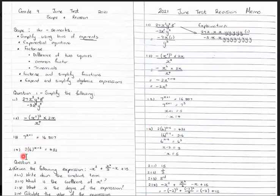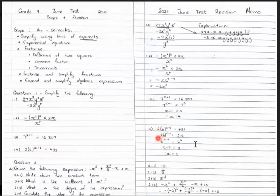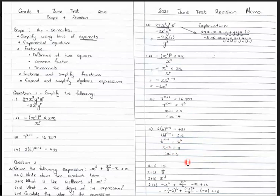Question 1.4: we have 2 times 6 raised to the power x minus 2. First, divide both sides by 2 to isolate the base, giving 216. Then write 216 with a base of 6: 6 to the power x minus 2 equals 6 cubed. Now with the same base, equate exponents: x minus 2 equals 3. Taking 2 to the other side gives x equals 5.